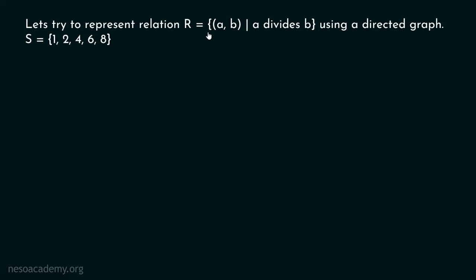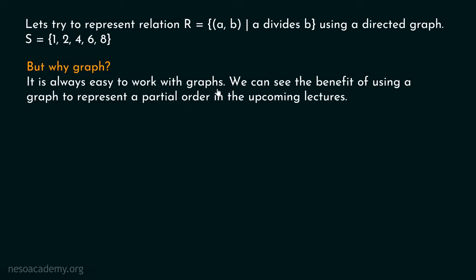Let's try to represent relation R, which consists of all ordered pairs (A, B) such that A divides B, using a directed graph. This relation is defined on set S, which consists of five elements: 1, 2, 4, 6, and 8. It is always easy to work with graphs. We can see the benefits of using a graph to represent a partial order in the upcoming lectures.